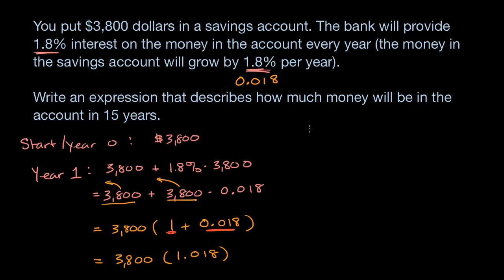What about year two? Well, we know what we're going to start with in year two. We're going to start with 3,800 times 1.018, but then it's going to grow by 1.8%. If you're going to grow by that amount, that's equivalent to multiplying it by 1.018. This is the same thing as 3,800 times 1.018 to the second power.